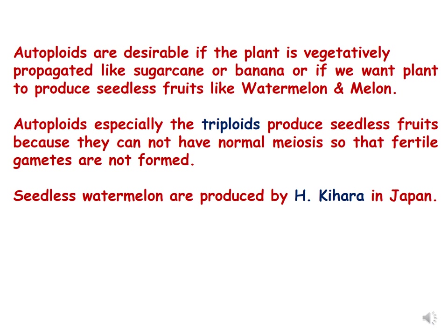Now we will discuss why polyploids or autoploids are desirable for consumers or farmers. Although autoploids, especially triploids — which are made by hybridization of a tetraploid plant with a diploid plant — will be sterile and they produce seedless fruits because they do not have normal meiosis and so fertile gametes are not formed. We might assume that because the plants are not setting seeds they will be useless for the consumer, but such plants are sometimes desirable for consumers who do not want seeds, like watermelon, melon, grapes, and banana.